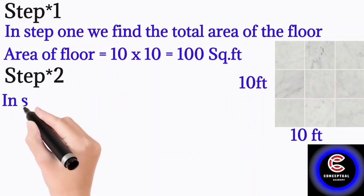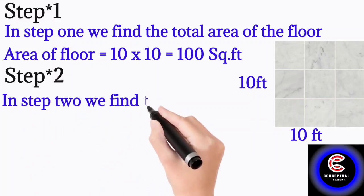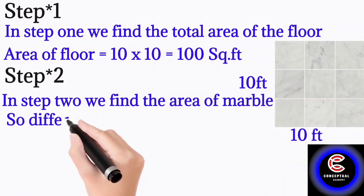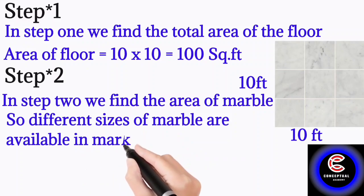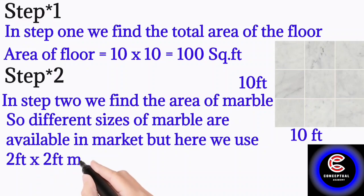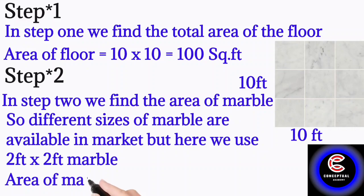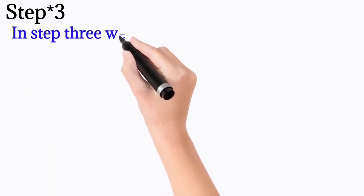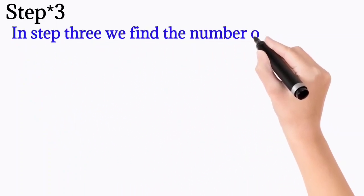Step 2: In step 2 we find the area of marble. So different sizes of marbles are available in market, but here we use 2 feet x 2 feet marbles. So area of marble is equal to 2 x 2 = 4 square feet.